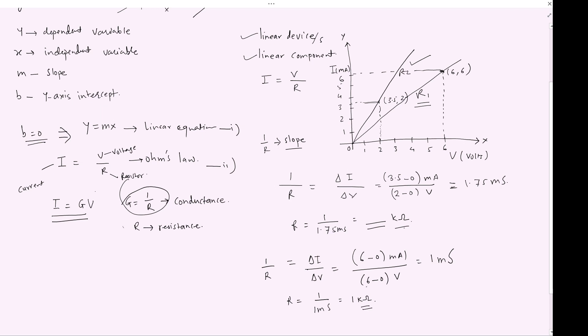So that's how we calculate the resistance from the I-V plot. This describes the linear behavior of a component — in this case, a resistor.